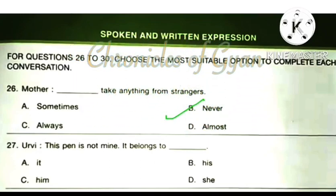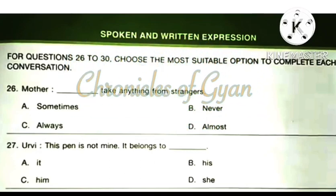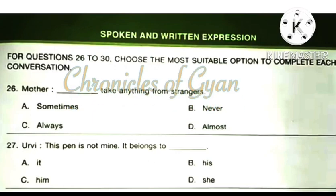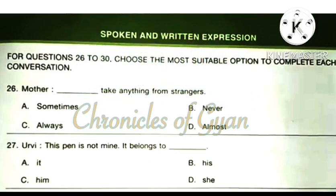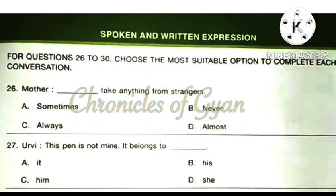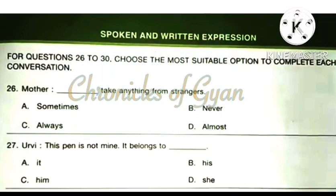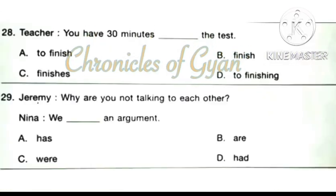Question 27 — Urvi: This pen is not mine. It belongs to dash. The correct answer is option C: Him. It belongs to him.